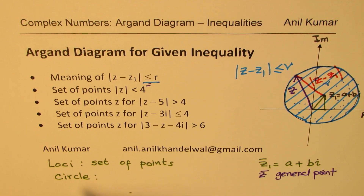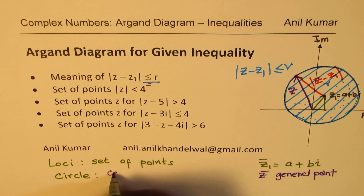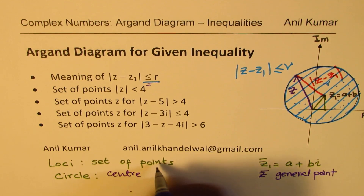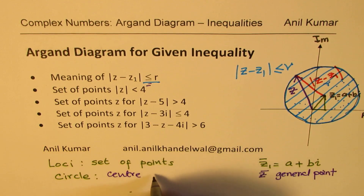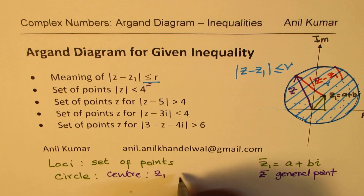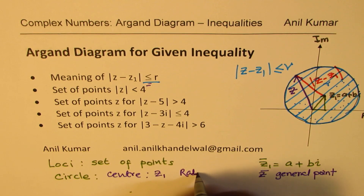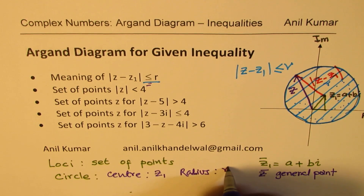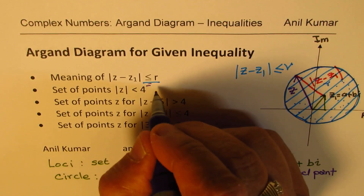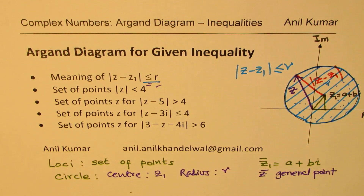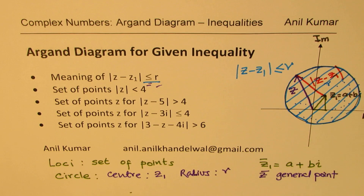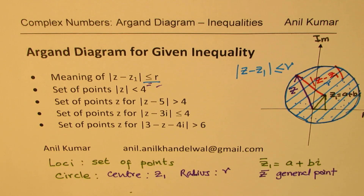This circle which we're talking about will have a center, and this center will be provided by the point z1. And we'll have a radius, and this radius will be r — the number given on the right side. So let's begin and do these examples one after the other.